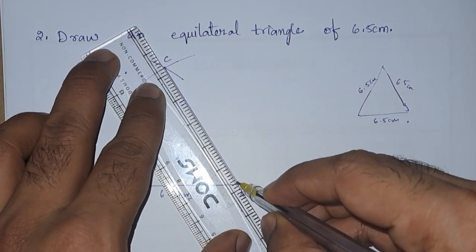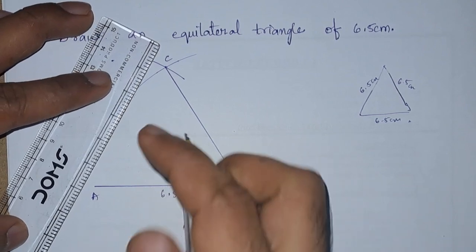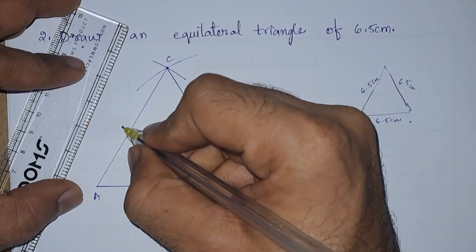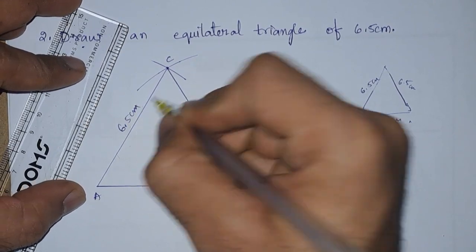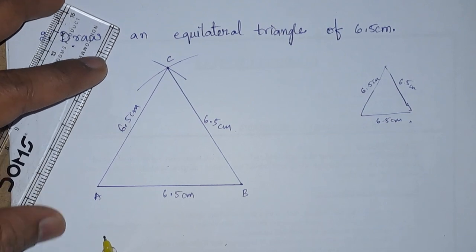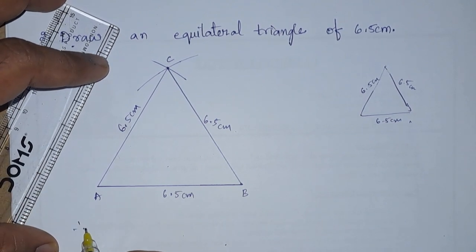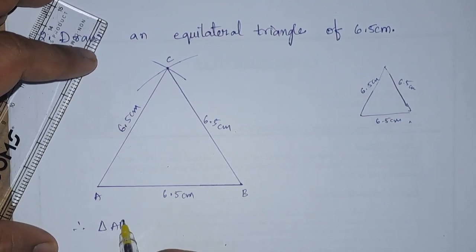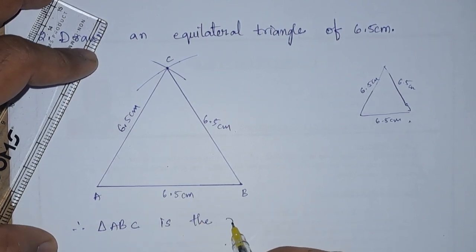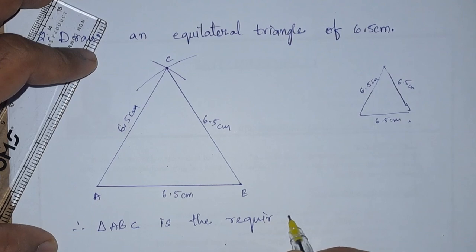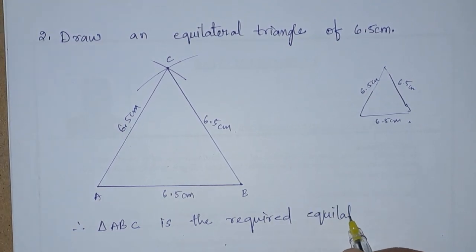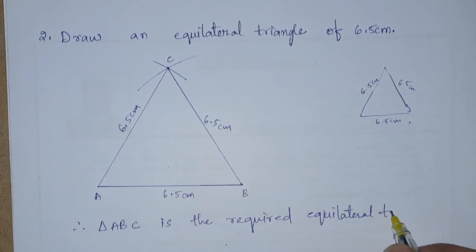Next we will join this point C with A and B. So these measurements are 6.5 centimeter and this is also 6.5 centimeter. Lastly, we will write down: therefore, triangle ABC is the required equilateral triangle.